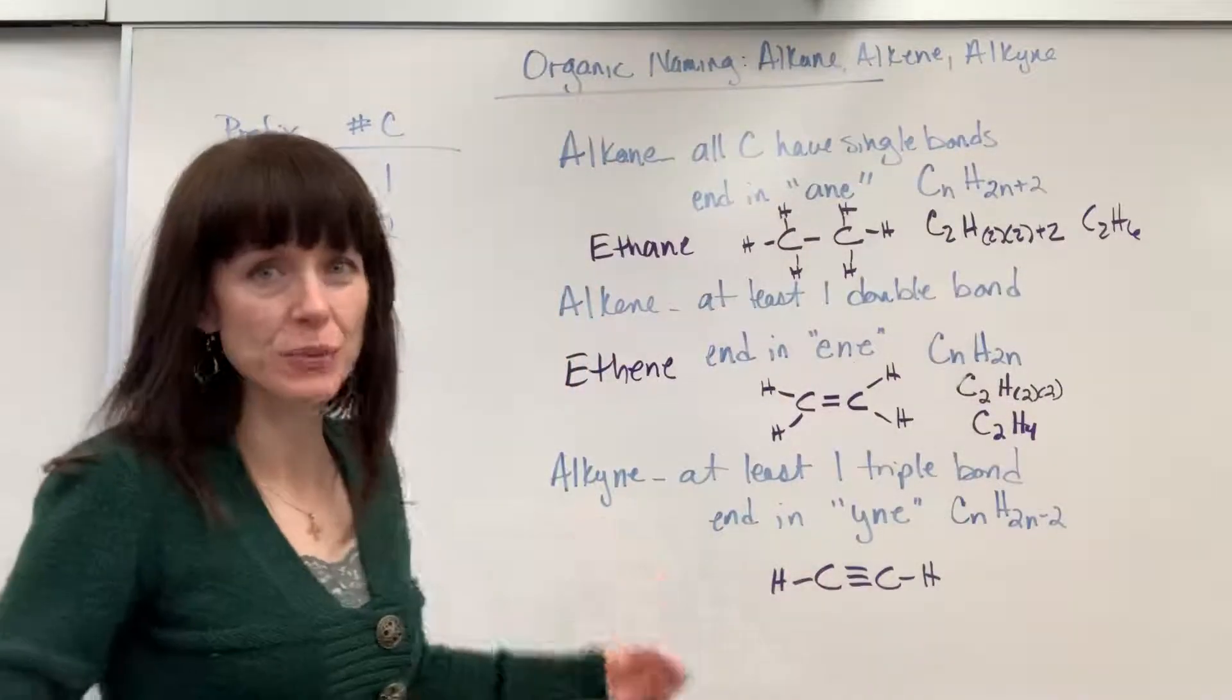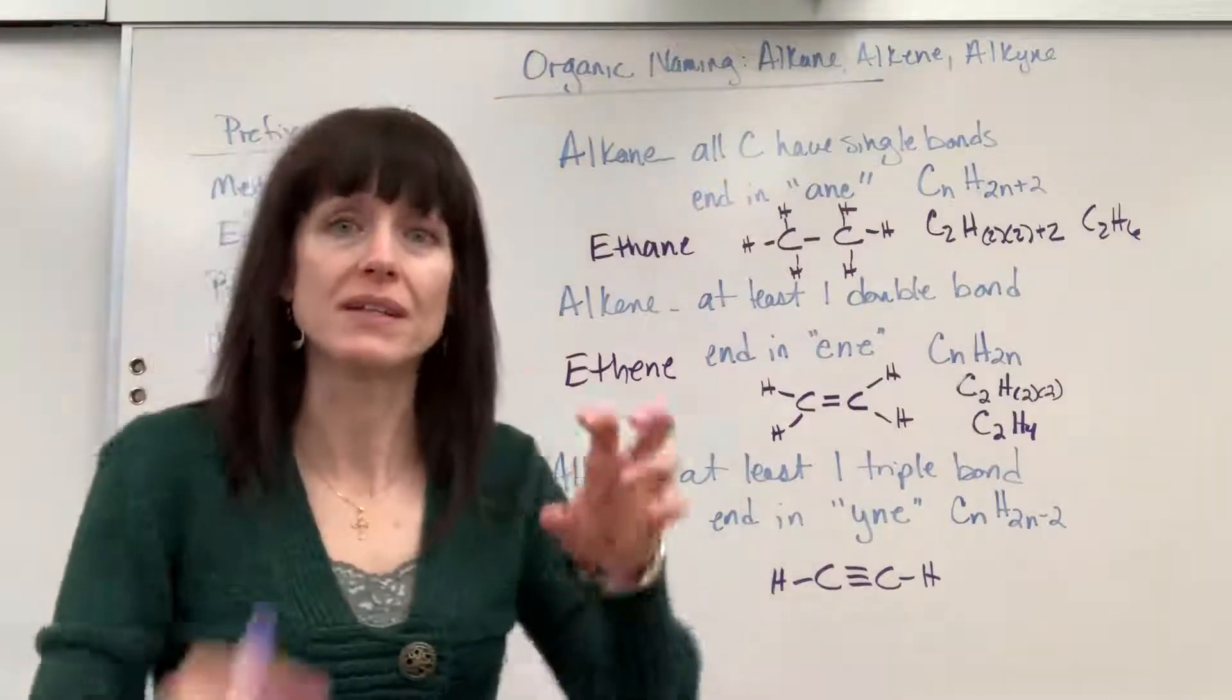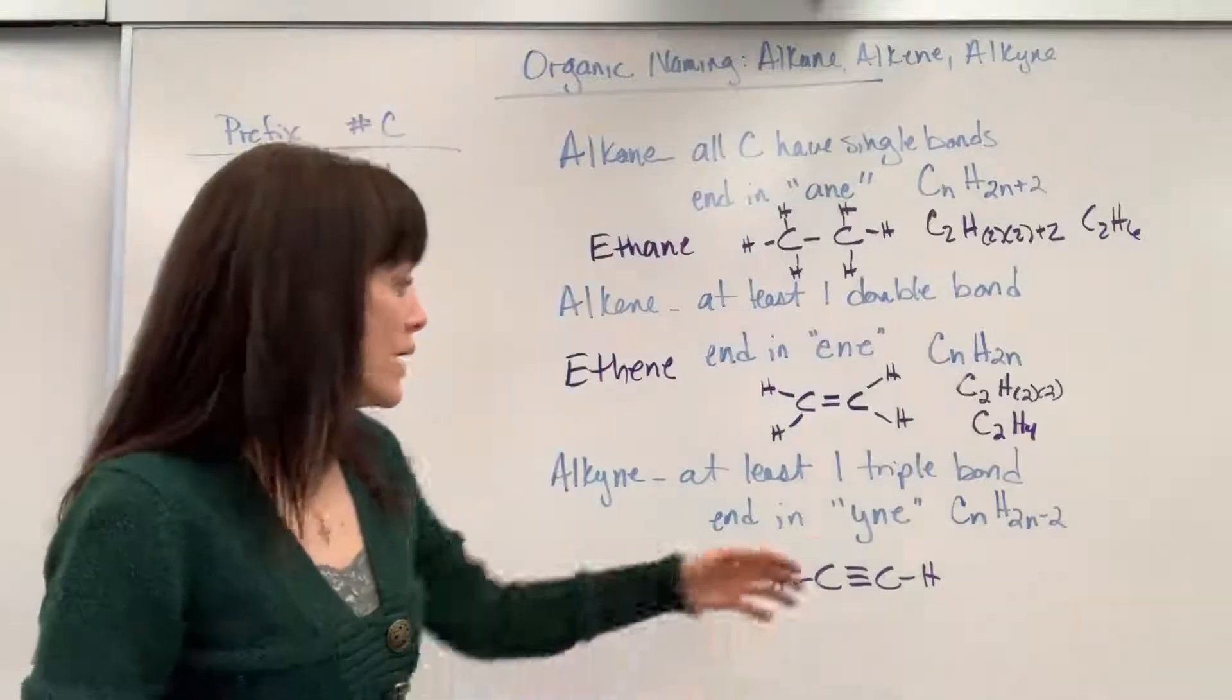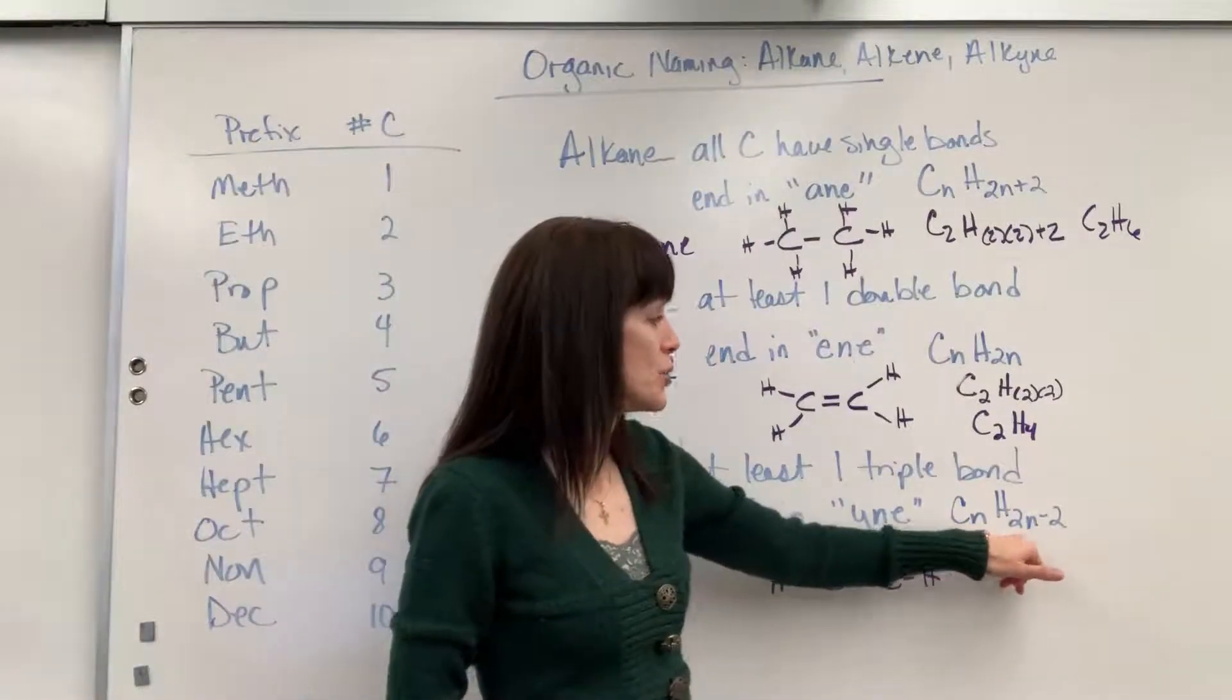Let's do our last one. Alkynes, Y-N-E, so you pronounce that with an I, alkyne. This means that you have at least one triple bond in that chain of carbons. Here's your formula. It's going to be CNH2N-2.